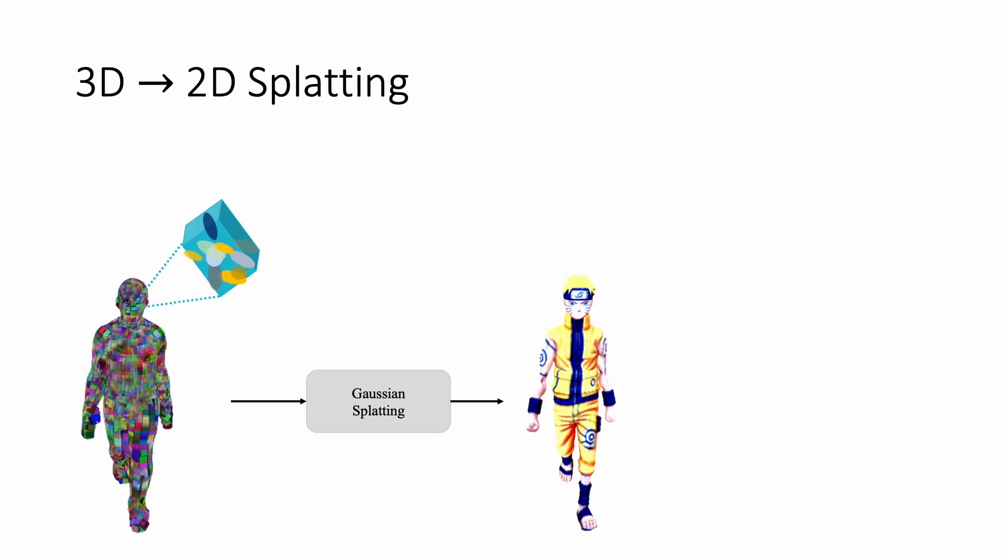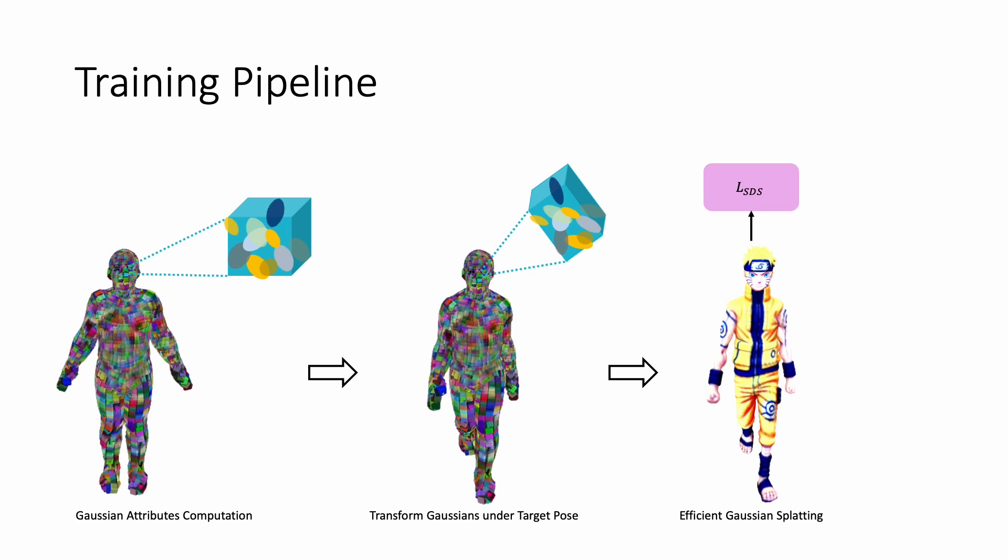Finally, we splat all Gaussians efficiently onto a 2D image. To summarize, our method first computes the properties of each Gaussian in the rest pose, and then transforms them according to the motion of the primitives under a target pose. We splat all Gaussians onto a 2D image and use the SDS loss as the main supervision. We also apply SDF-based geometry regularization. More details can be found in the main paper.